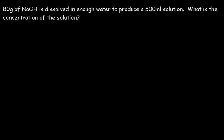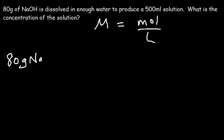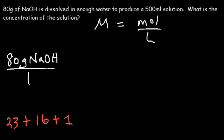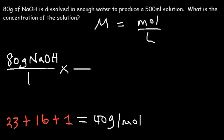Let's look at this problem: 80 grams of sodium hydroxide is dissolved in enough water to produce a 500 mL solution. What is the concentration in molarity? Molarity is moles over liters. Starting with 80 grams of NaOH, we need its molar mass: sodium is 23, oxygen is 16, hydrogen is 1, giving a total of 40 grams per mole. So one mole of sodium hydroxide has a mass of 40 grams.